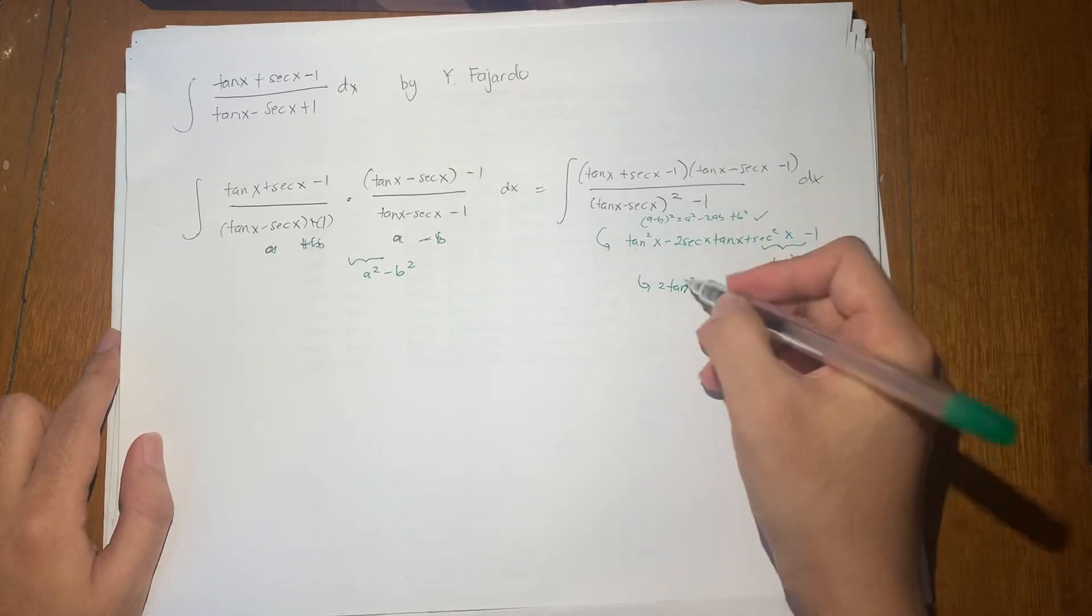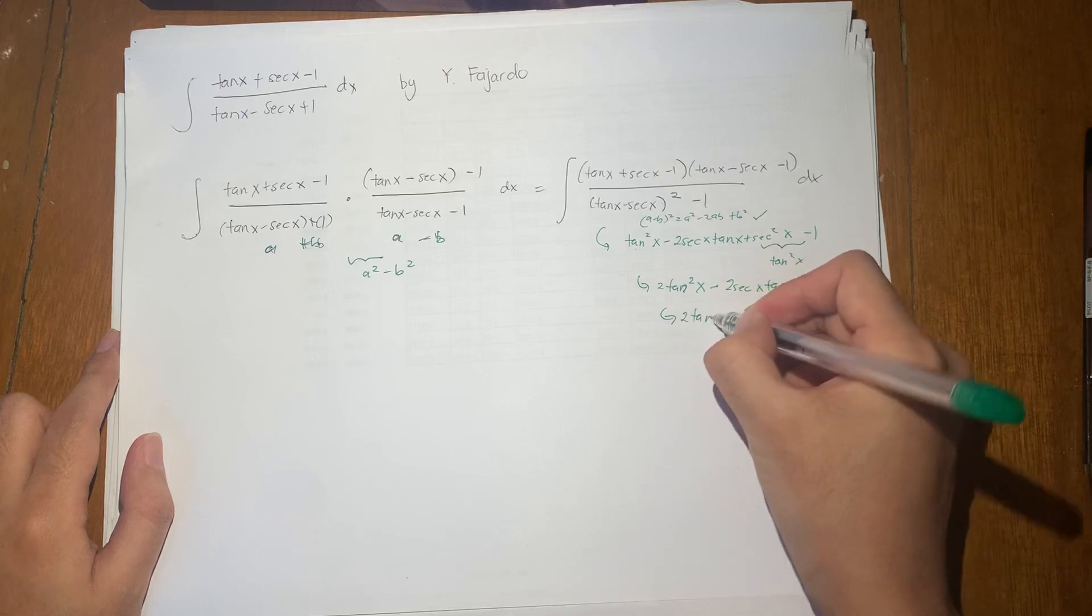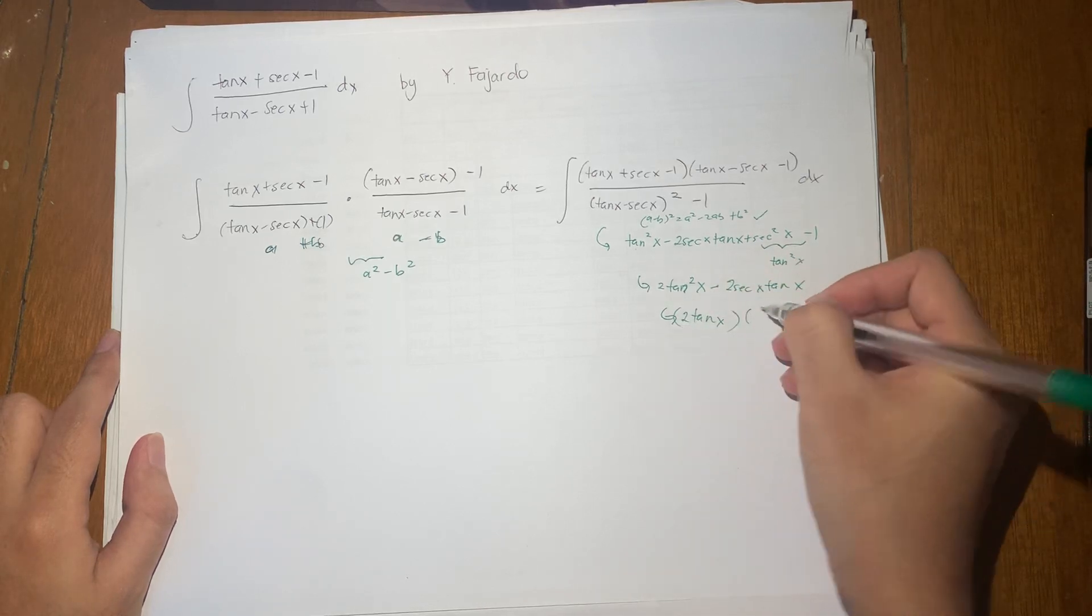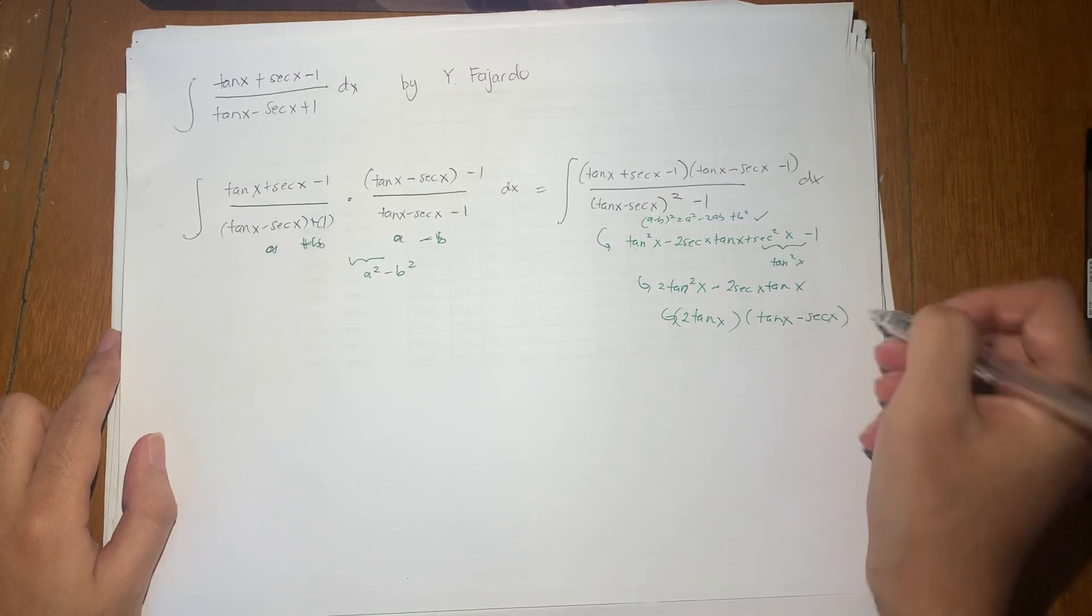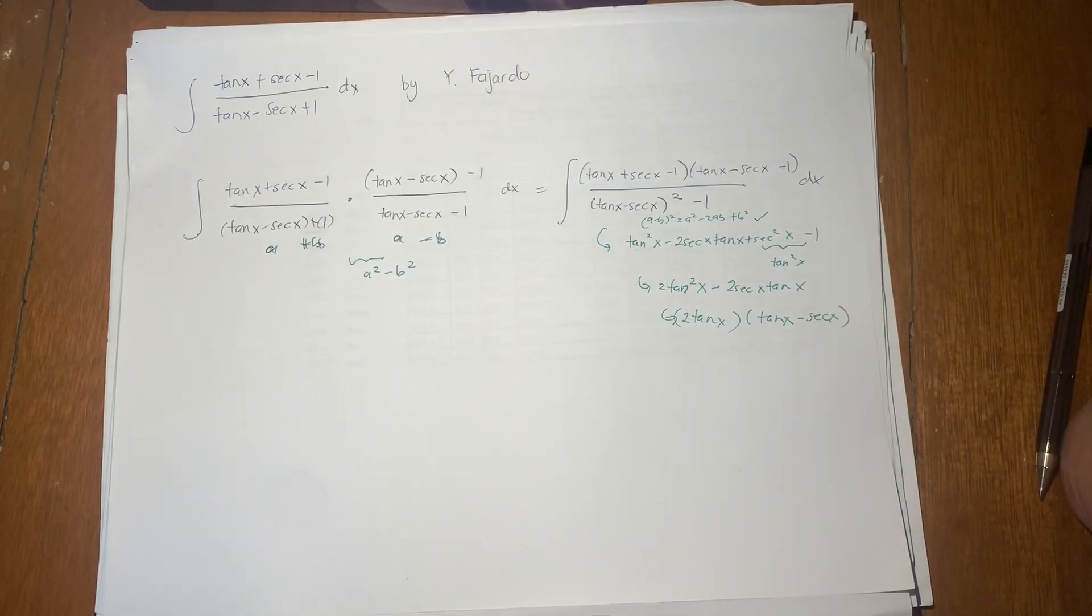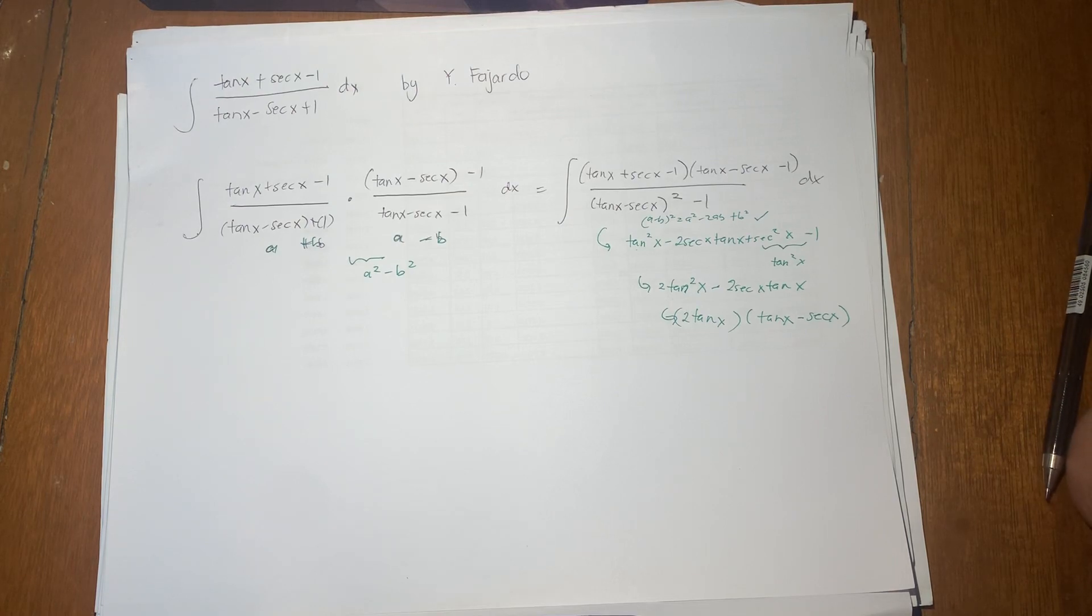Okay, and then I can factor out the 2 tan x. This becomes 2 tan x times tan x minus secant of x. Okay, now what?